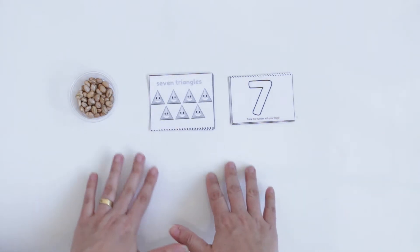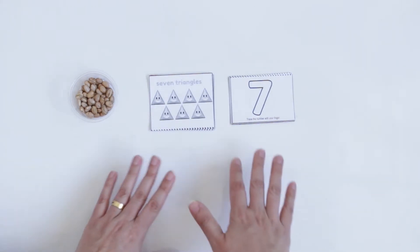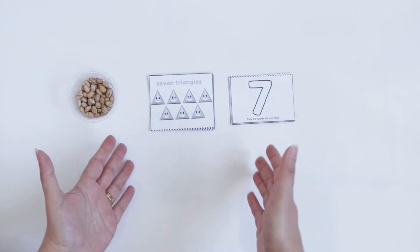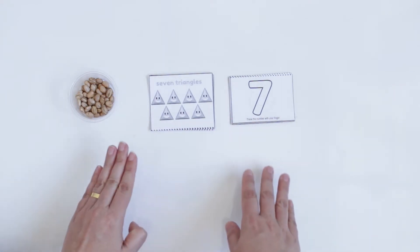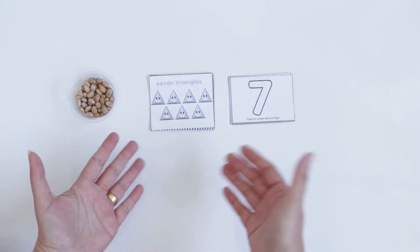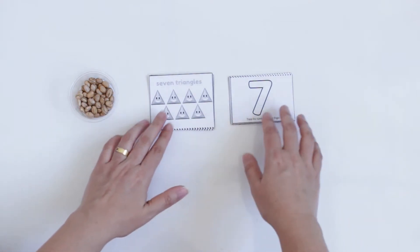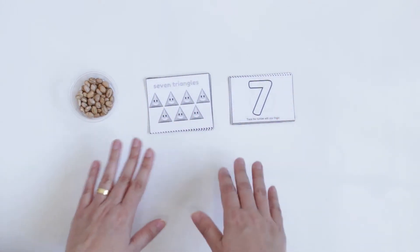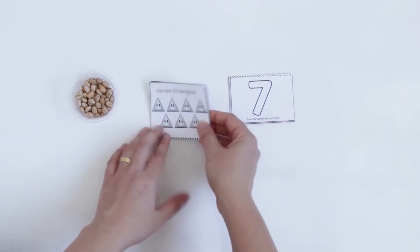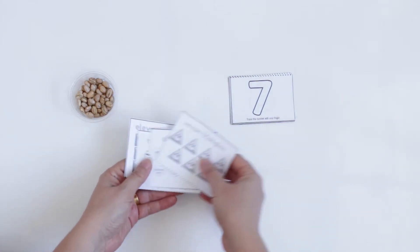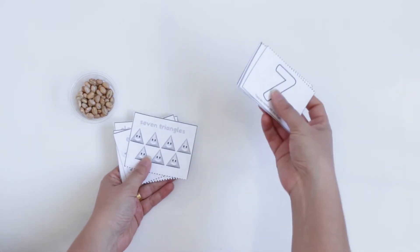The first one, I did this activity with numbers 1 to 6, and in this video, I'm going to do from 7 to 12. This activity is the same. You just need to print out the same PDF, it's in the description of this video. You need to cut and separate the shapes from the numbers.